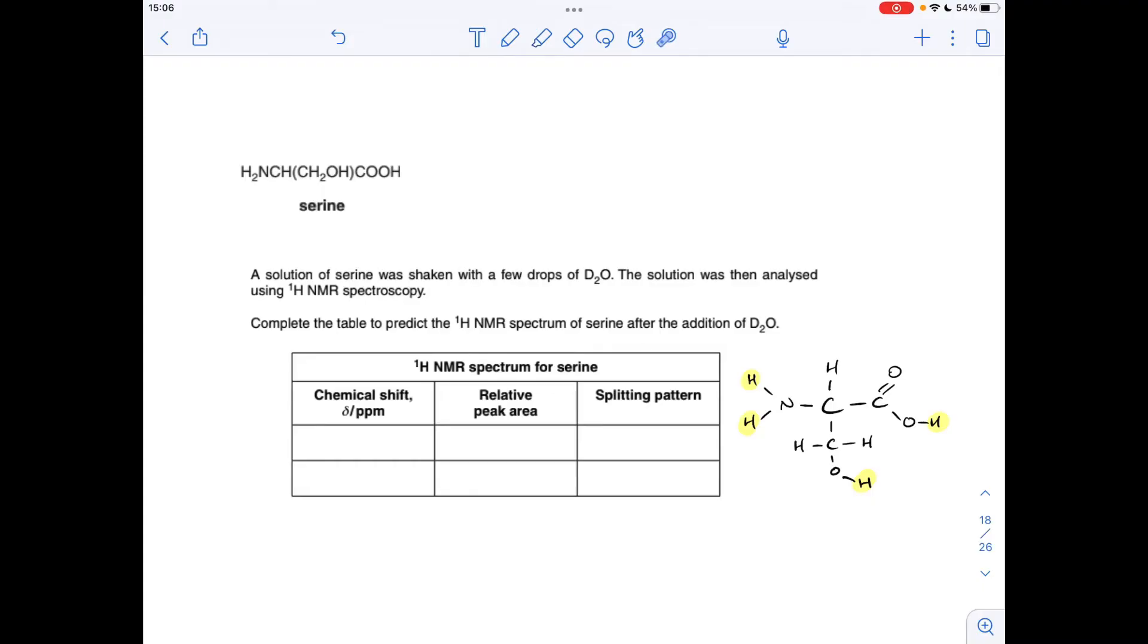So, we've got two proton environments. We've got this one here, and these here. Obviously, they're equivalent. That's why we've got two rows in this box.